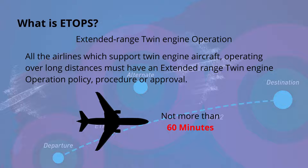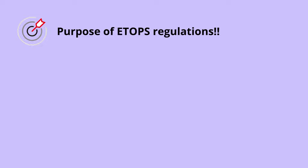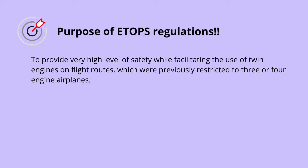This means that twin engine aircraft are not normally allowed to operate for more than 60 minutes single engine flying time from a suitable alternate airfield. The purpose of ETOPS regulations was to provide a very high level of safety while facilitating the use of twin engines on flight routes which were previously restricted to three or four engine airplanes.